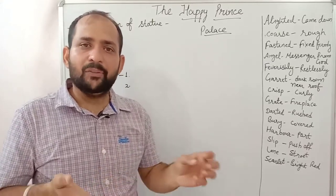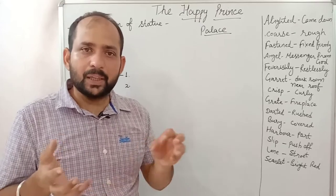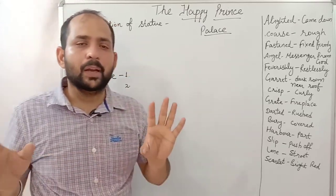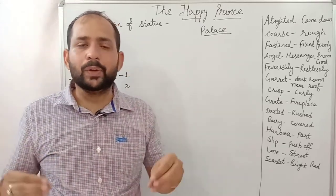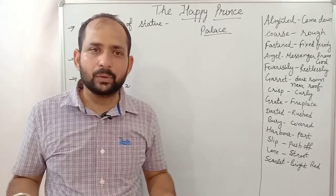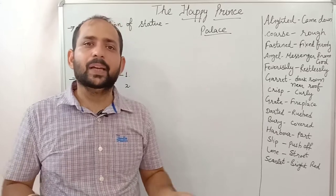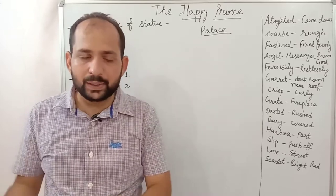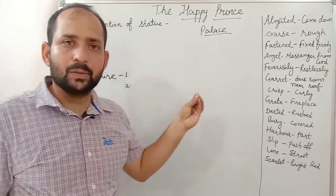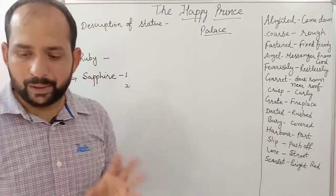When he was alive he was happy, but now after death, in the form of a statue, he was very sad. He could see the miseries of the city. Today we will read this chapter and find out what kind of miseries were there.